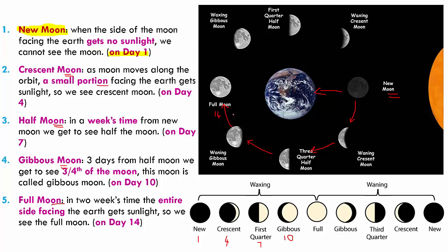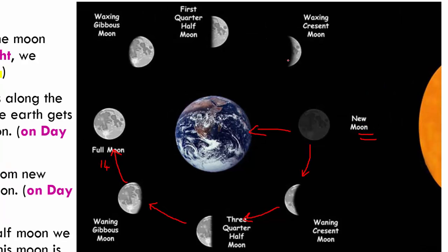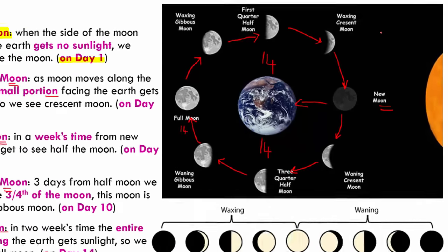This is half of the cycle. The second half of the cycle, which is the next fourteen days, happens in the reverse order — from full moon it moves to gibbous moon, from gibbous moon to half moon, from half moon to crescent moon, and from crescent moon we're back to new moon. This takes another fourteen days. One revolution takes twenty-eight days, so one half takes fourteen days and the other half takes another fourteen days, bringing us to a total of twenty-eight days.